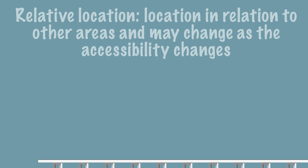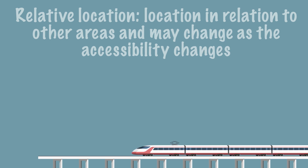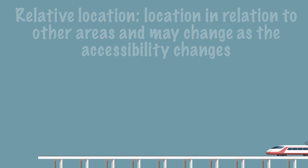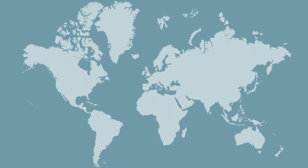For example, if there is an existing railway line but a new trade station is being built, the relative location of this place improves because it is easier to reach.